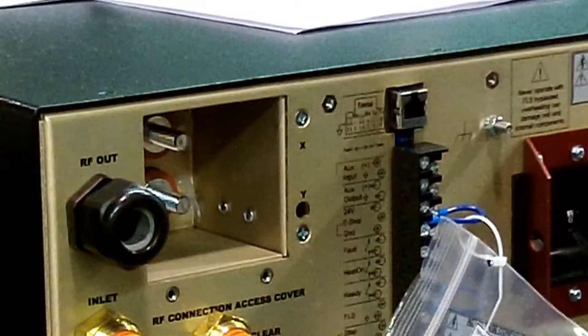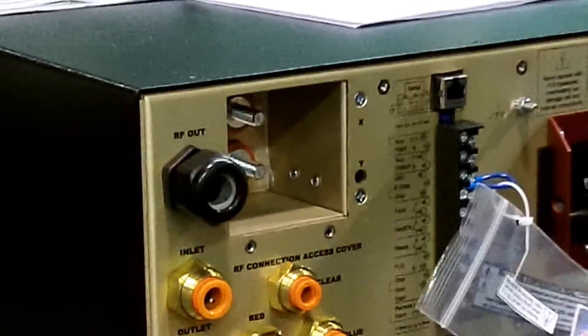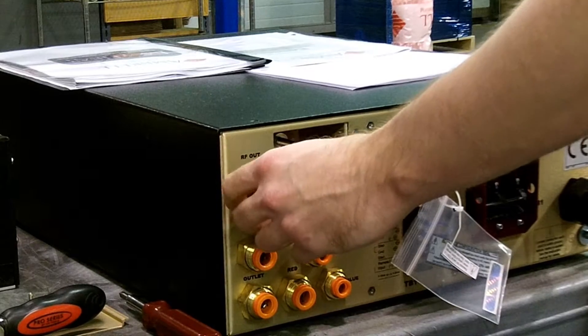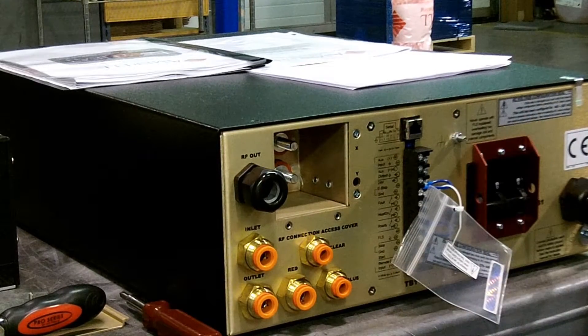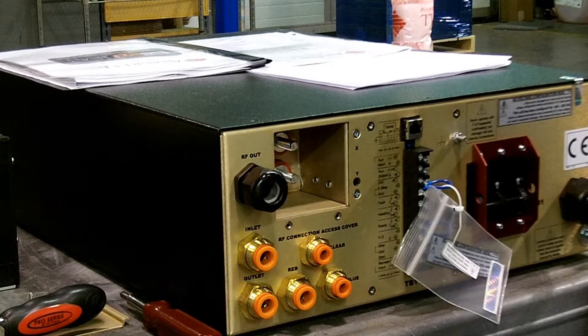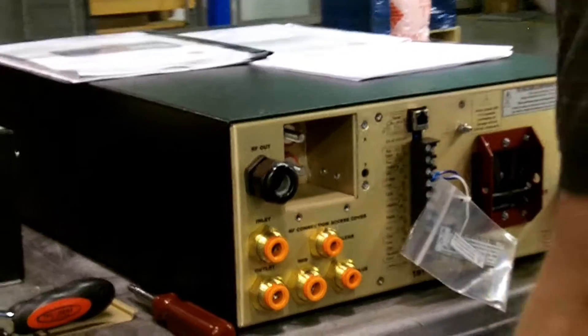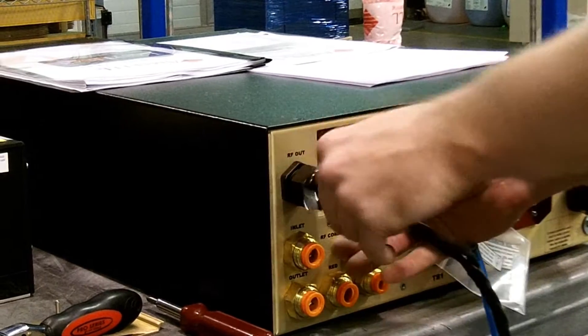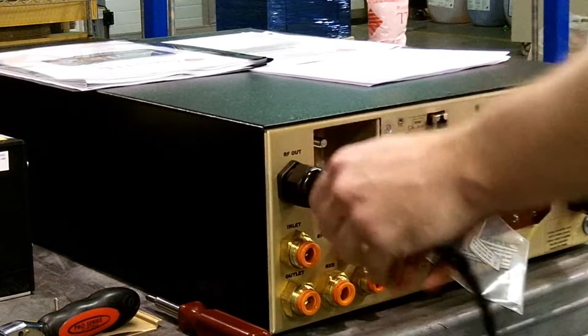Now, we need to loosen the RF-out cable clamp by turning counter-clockwise. With the cable clamp loosened, we can now feed the RF cables through the RF-out cable clamp and connect the X and Y posts on the rear.